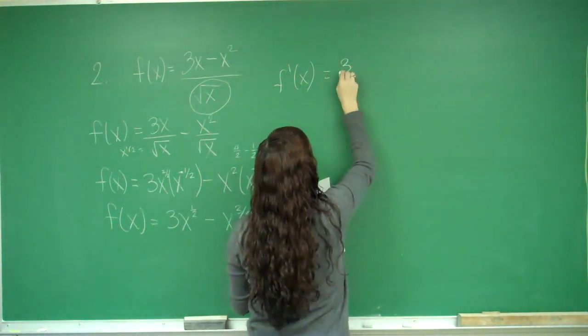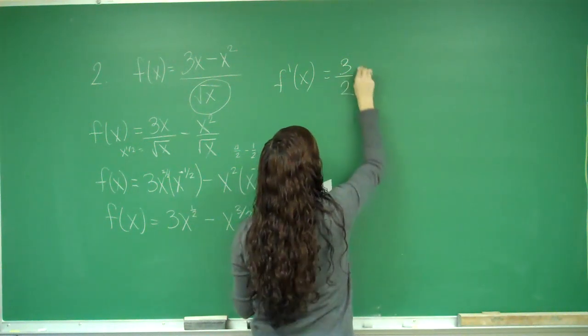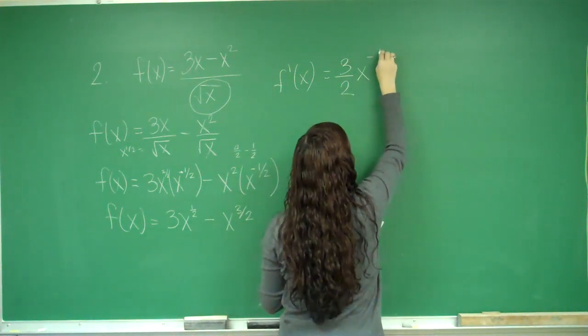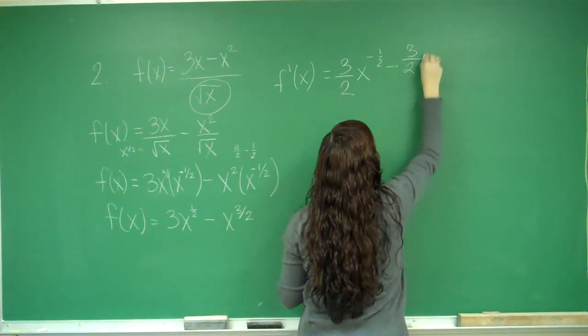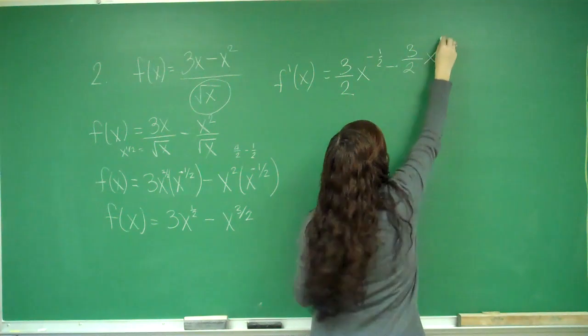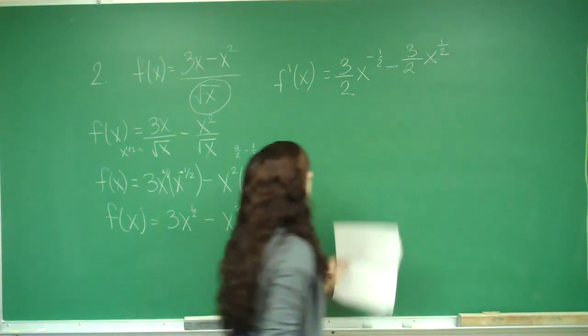I'm going to bring down my power to the one half. So I'll have 3 over 2x, and then subtract 1 to the negative one half. And then minus three halves x. And then when I subtract 1, I get one half.